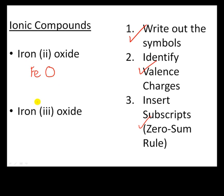Now let's try iron 3 oxide. Again, iron and oxygen are a metal and non-metal, so we can use this naming system. Write out the symbols: Fe and O. Identify the valence charges: oxygen is 2−, and iron is either 2+ or 3+. As indicated by the Roman numeral in the name, it is an iron 3+, not a 2+.